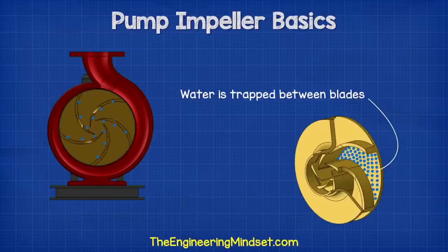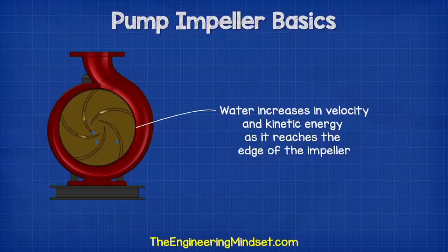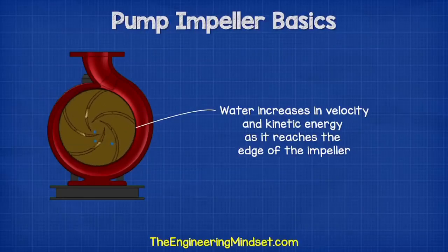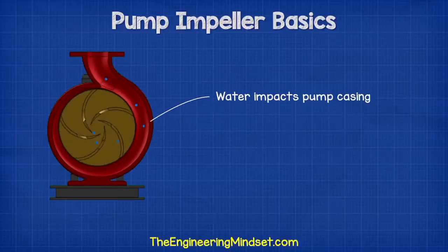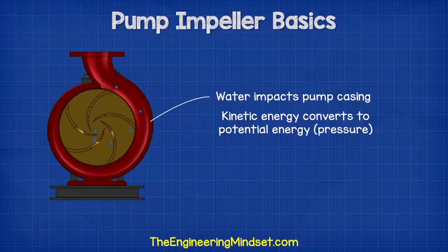The water enters into the eye of the impeller and is trapped there between the blades. As the impeller rotates, it imparts kinetic energy or velocity onto the water. By the time the water reaches the edge of the impeller, it has reached a very high velocity. This high-speed water flows off the impeller and into the volute, where it hits the wall of the pump casing. This impact converts the velocity into potential energy or pressure.